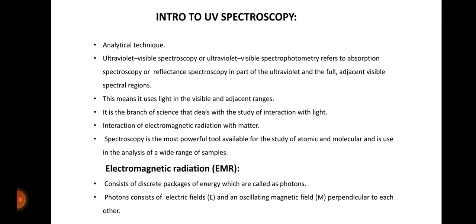What is UV spectroscopy? It is an analytical technique. The ultraviolet-visible spectroscopy or ultraviolet-visible spectrometry refers to absorption spectroscopy or reflectance spectroscopy in part of the ultraviolet and full adjacent visible spectral regions. This means it uses light in the visible and adjacent ranges.